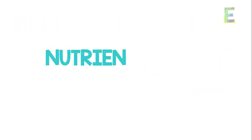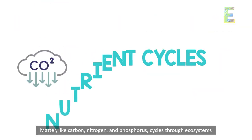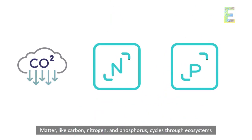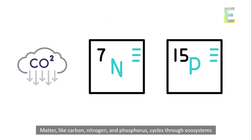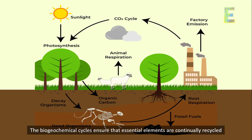Nutrient cycles: matter, like carbon, nitrogen, and phosphorus, cycles through ecosystems. The biogeochemical cycles ensure that essential elements are continually recycled.